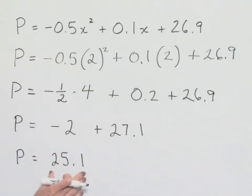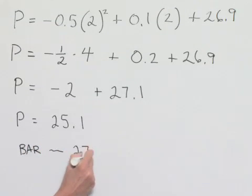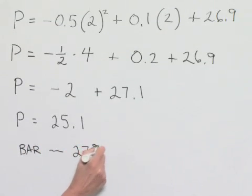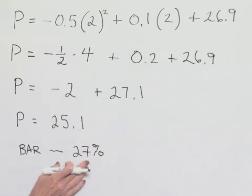Now remember at this point we're supposed to be comparing this to what we saw in the bar graph. Recall that the bar graph told us that our percentage was going to be 27%. So we can see right off the bat that this is going to be an underrepresentation of the actual percentage.